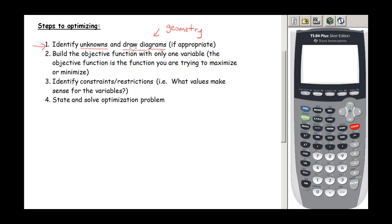Once we know all of our unknowns, we're going to build that objective function. So remember the objective function, that is the function that we are trying to maximize or minimize. And typically, we're going to end up with more than one variable, so we want to make sure that we have just one variable in our final objective function.